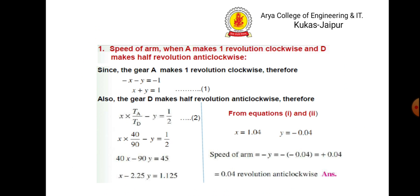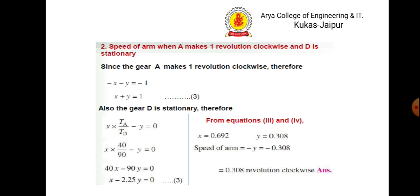Case 1 — speed of arm when a makes one revolution clockwise and d makes half a revolution anti-clockwise: −x − y = −1 and x × (t_a / t_d) − y = −½. Solving these two equations gives x and y; the speed of arm (= −y) is 0.04 revolutions anti-clockwise. Case 2 — when a makes one revolution clockwise and d is stationary: −x − y = −1 and x × (t_a / t_d) − y = 0. Solving gives the speed of arm as 0.308 revolutions clockwise.